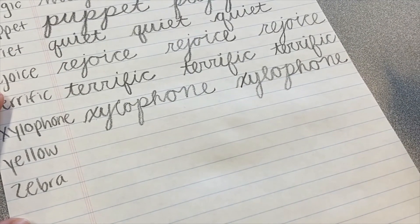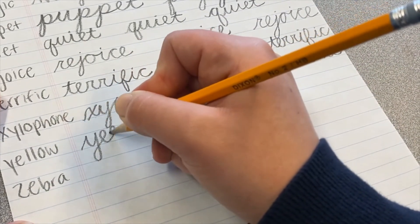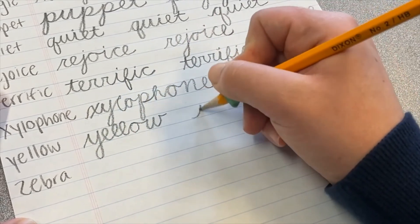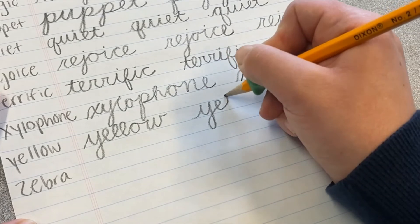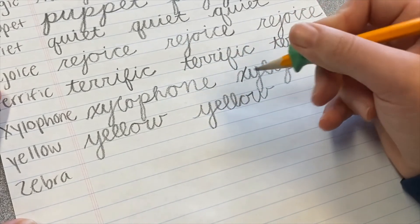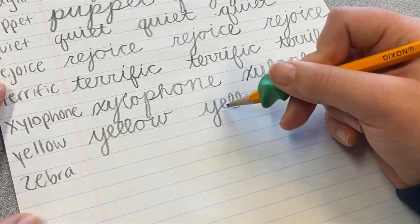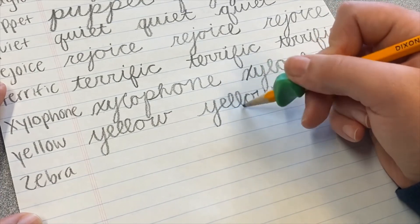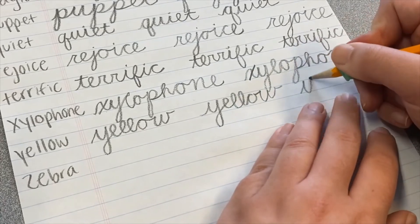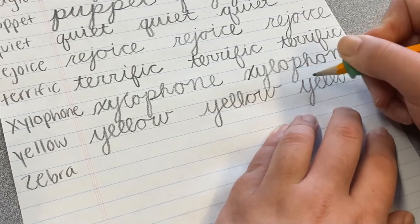The next word is yellow. Y, E, L, L, O, W. Remember to try to make your E's and L's look different. My E is a little bit shorter and more rounded, whereas my L's are a little taller and skinnier. And both the O and the W connect out the top.